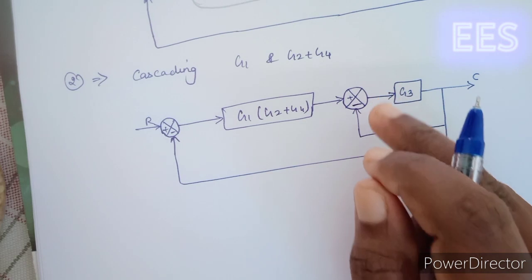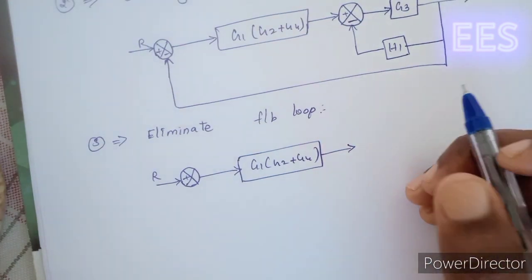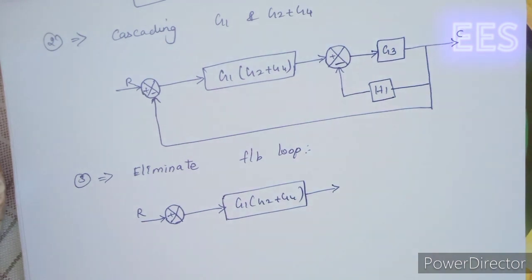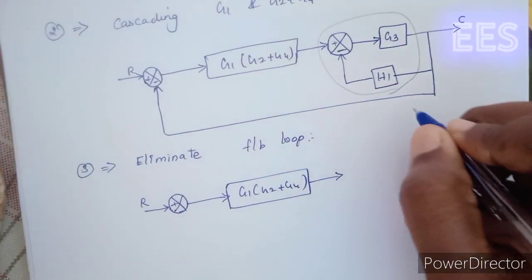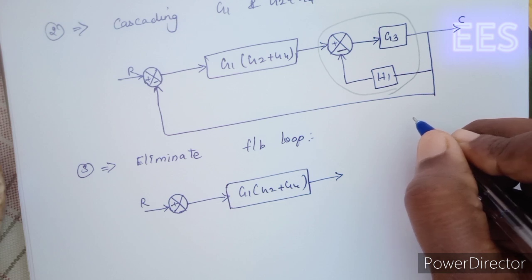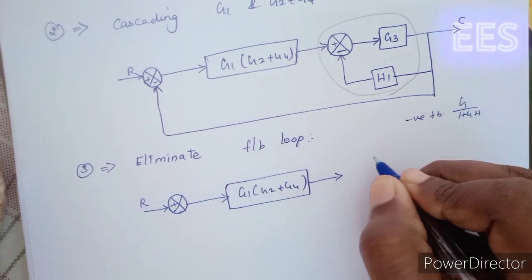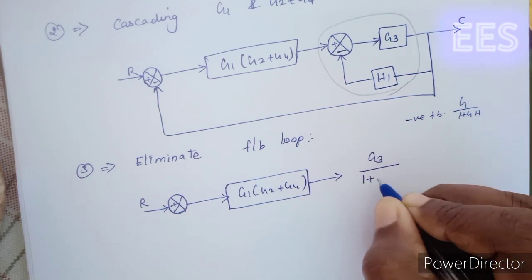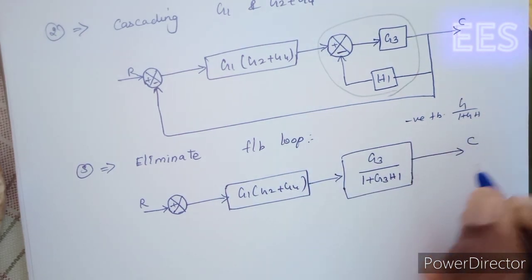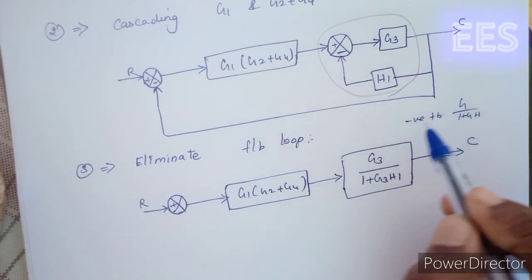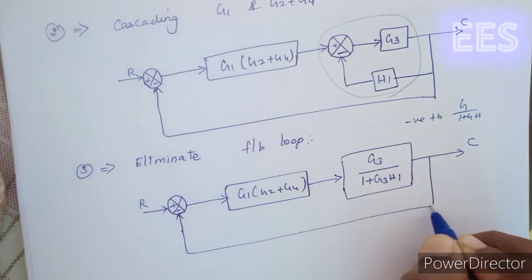We will refer to the previous class video. So, we eliminate the feedback loop. The negative feedback formula is G divided by 1 plus GH. We will apply this to eliminate the feedback loop here.